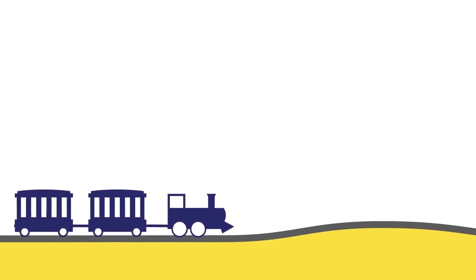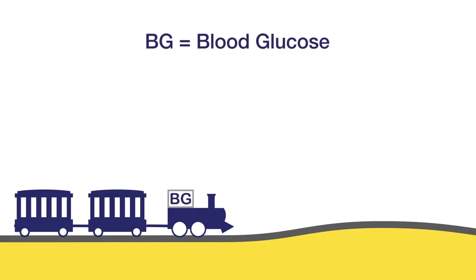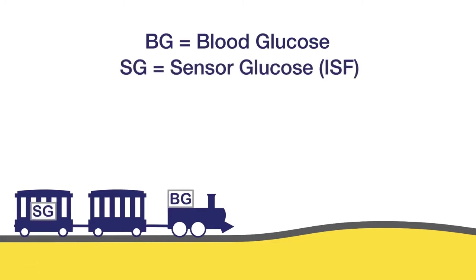A train is a good way to illustrate this concept of lag. Think of blood glucose and ISF glucose as the cars of a train. In the front car of the train is blood glucose, or BG. In the back of the train is the ISF, or sensor glucose, SG. Imagine that the hills and bumps on the track are like the changes in your glucose levels throughout a typical day.